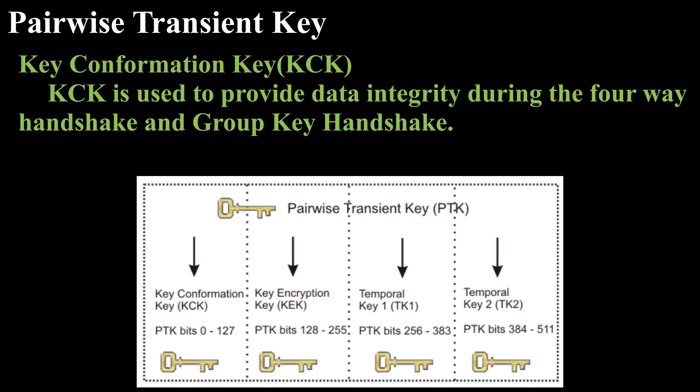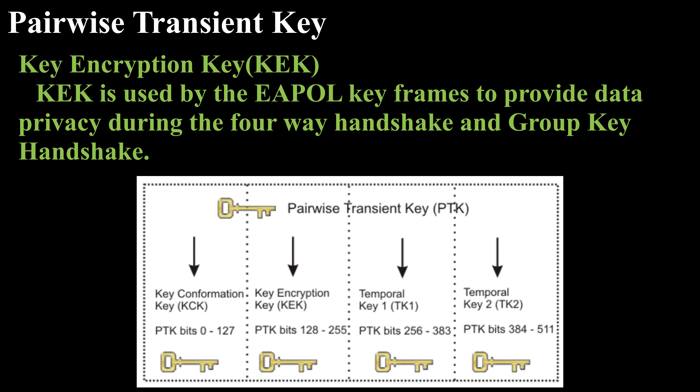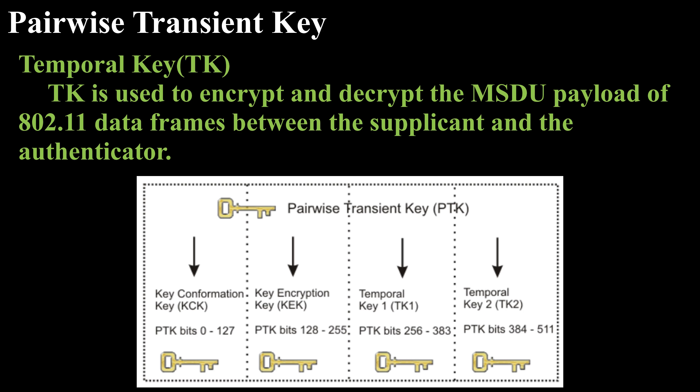The PTK is composed of three sections. The Key Confirmation Key (KCK) is used to provide data integrity during the four-way handshake and group key handshake. The Key Encryption Key (KEK) is used by the EAPOL key frames to provide data privacy during the four-way handshake and group key handshake. The Temporal Key (TK) is used to encrypt and decrypt the MSDU payload of 802.11 data frames between the supplicant and the authenticator.